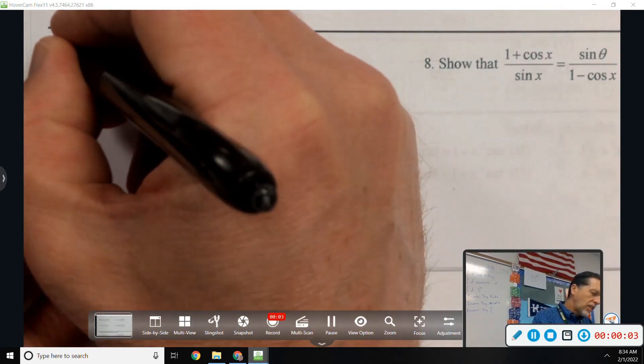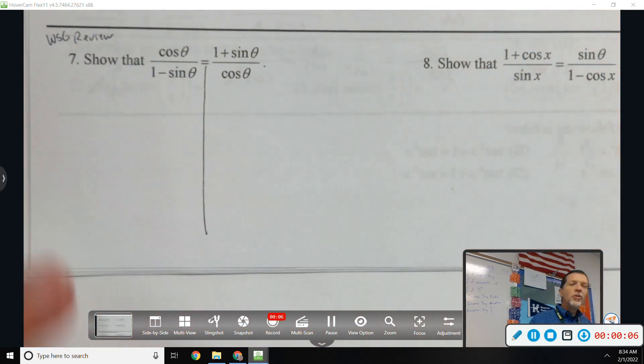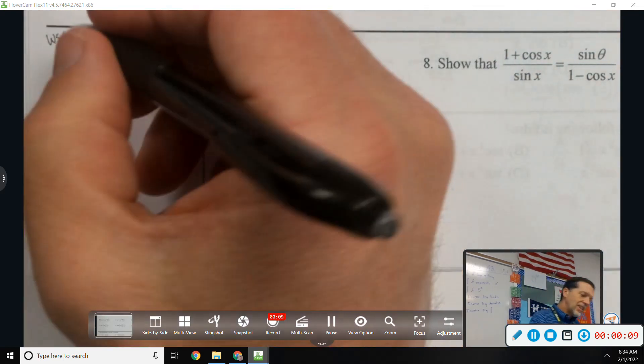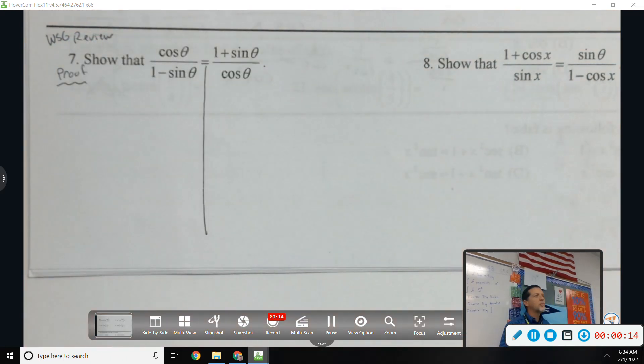This is from Worksheet 6, the review. Show that, right? We're being kind. This is really a proof, but since people panic when we say proof, sometimes we avoid it.